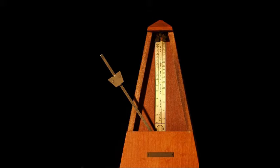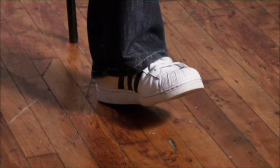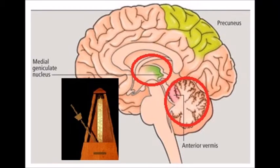Indeed, the cerebellum acts as a neural metronome of sorts, using the broad range of sensory inputs it receives to synchronize movements to external stimuli. In addition, a subcortical structure called the medial geniculate nucleus, or MGN, seems to affect synchronization as well. The MGN communicates directly to the cerebellum without having to signal higher cortex areas — this explains how we can unconsciously tap our foot to a beat without being aware of it. In summary, the precuneus in the parietal lobe is the main area responsible for spatial movement and orientation, while the anterior vermis and medial geniculate nucleus are the main areas responsible for the synchronization of movements to music.